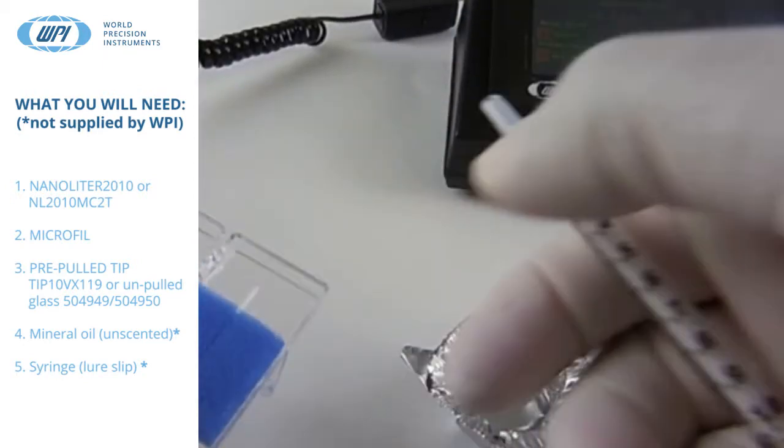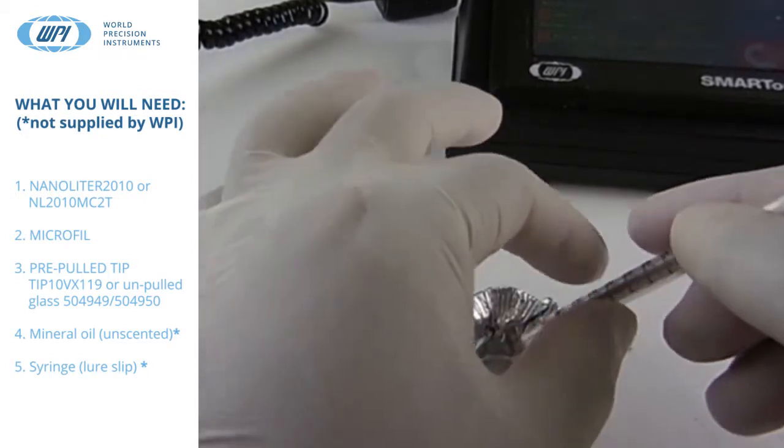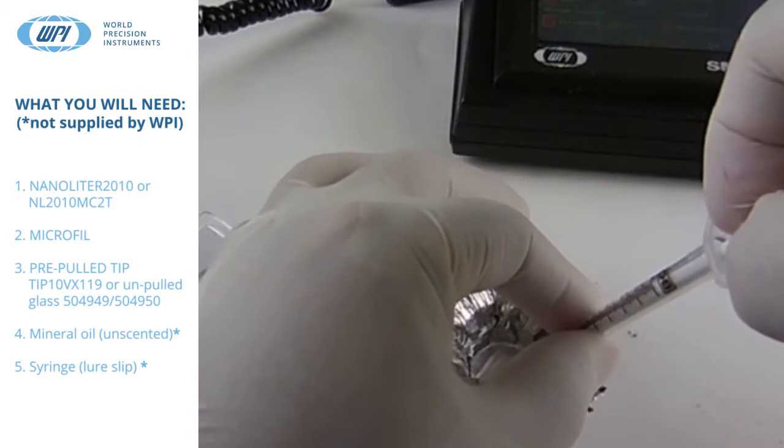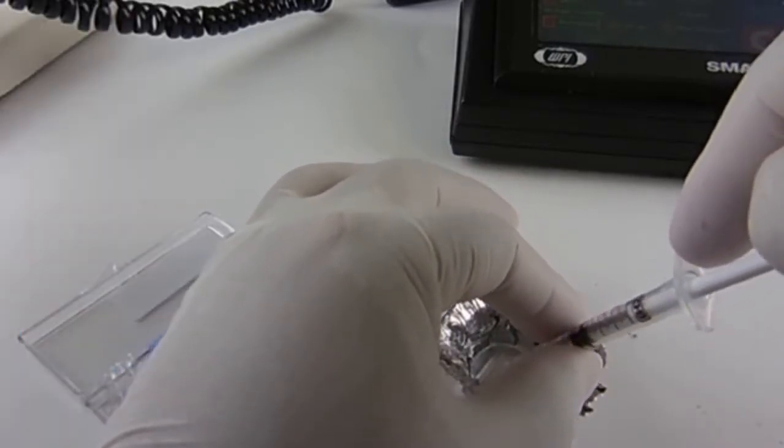WPI sells tips, or if you prefer you can buy the 3.5 or 7 inch glass to pull your own tips. The pre-pulled tips we sell is part number TIP10XV119.